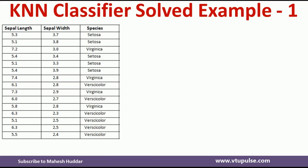This is the dataset given to us. The dataset contains 15 examples and two features: sepal length and sepal width. Species is the target variable. The target has three possibilities: setosa, virginica, and versicolor.